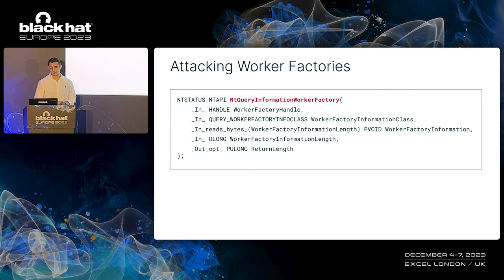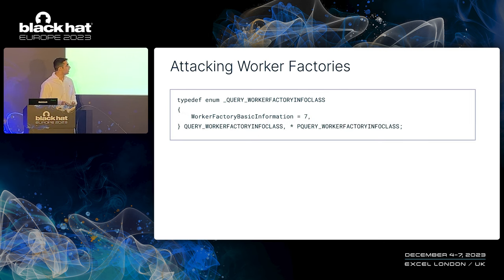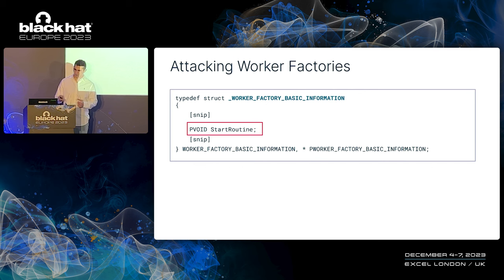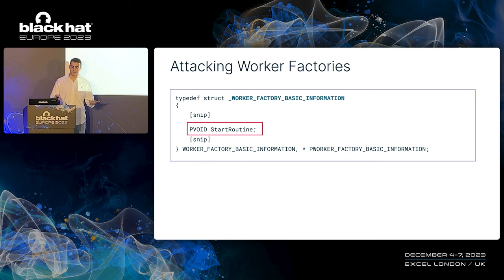To get worker factory information, the query system call can be used — it accepts a worker factory handle, an information class stating which information to retrieve, and a buffer to which the retrieved information will be written. The only information class supported by the query system call retrieves basic information on the worker factory. In this case, this is enough, as the basic information includes the start routine pointer that we are targeting. Given the start routine pointer, we can overwrite the start routine contents with malicious shellcode. The start routine is guaranteed to run at some point, but it would be even better if we could trigger its execution.